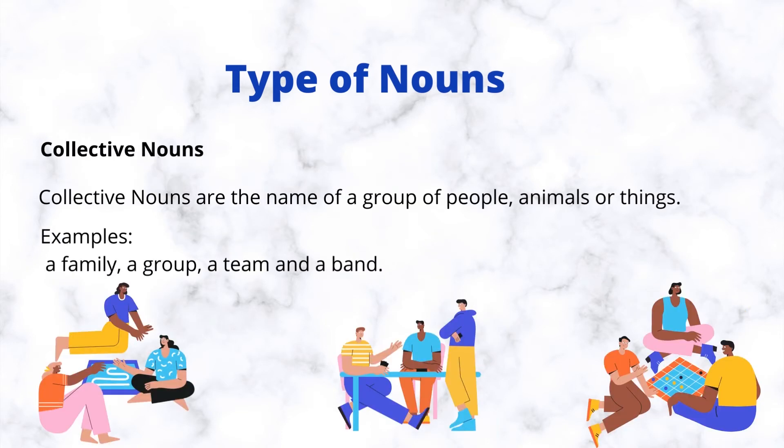Collective nouns are the name of a group of people, animals, or things. Examples: a family, a group, a team, and a band.